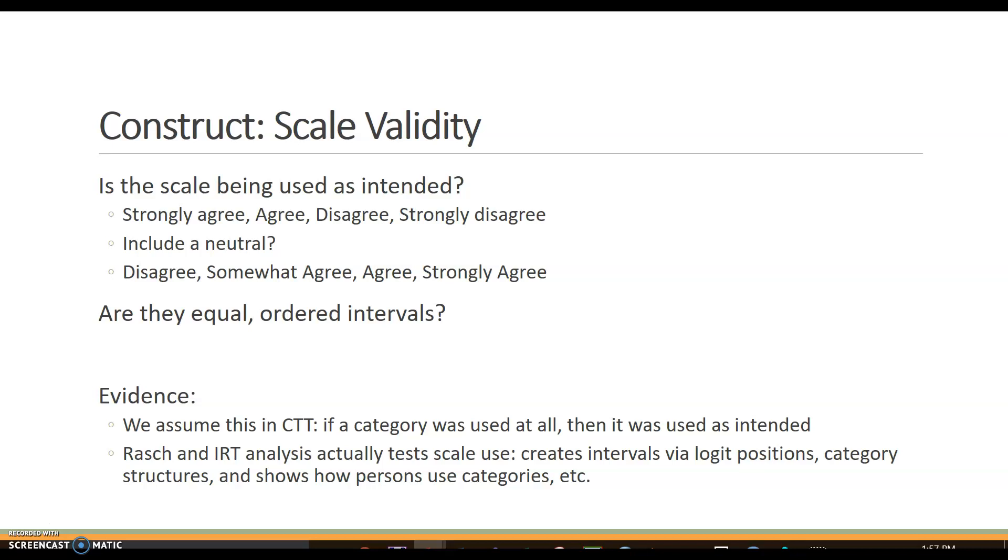And then we have construct validity. I'm breaking this down into three different ideas as well. So within construct validity, we have scale validity, meaning is the scale being used as intended? Are they actual equal ordered intervals? This is completely assumed in classical test theory. If a category was used, then it was used as intended. Rasch and IRT specifically test this through a lot more detailed manners.